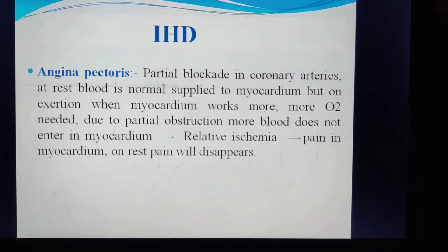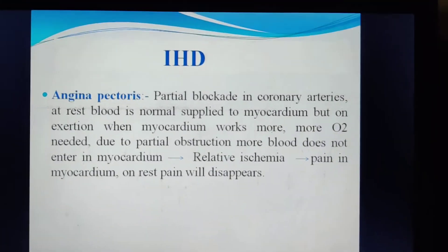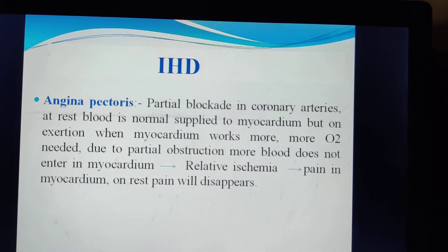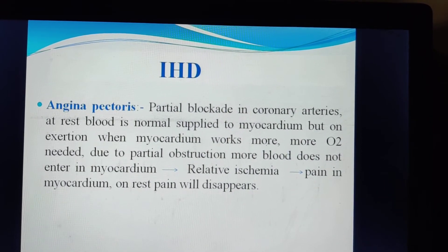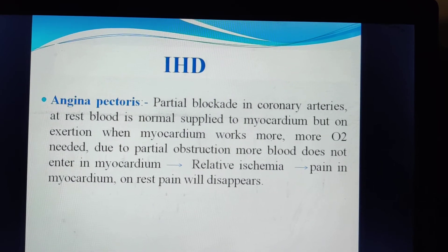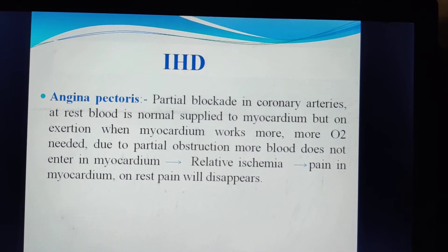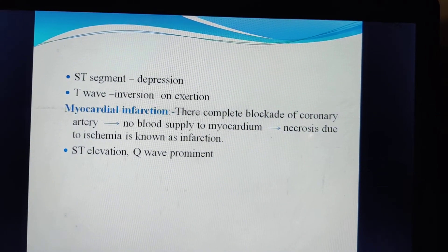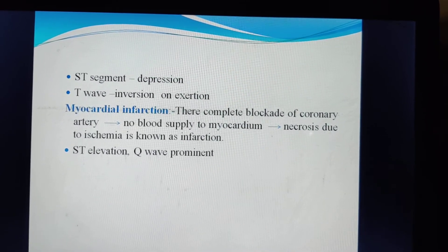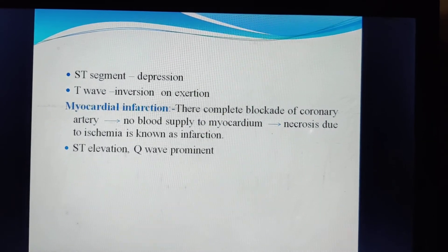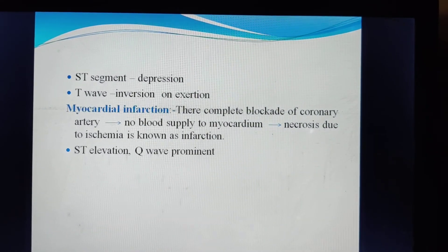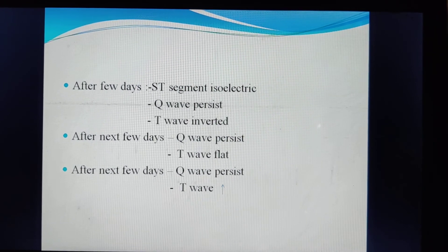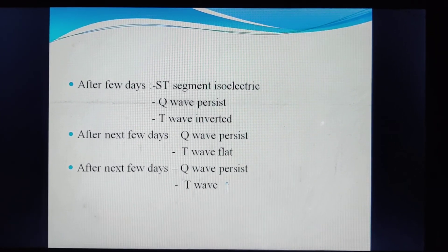Angina pectoris involves partial blockage of a coronary artery. More oxygen demand occurs but due to partial obstruction, less blood enters the myocardium, causing relative ischemia and myocardial pain. With rest, pain disappears. ECG shows ST segment depression and T wave inversion. In myocardial infarction (MI), there is complete blockage of a coronary artery and no blood supply to the myocardium, causing necrosis. ECG shows ST elevation and a prominent Q wave. After a few days, ST segment normalizes but Q wave persists and T wave becomes inverted. After more days, Q wave persists and T wave remains inverted. Thank you everyone.